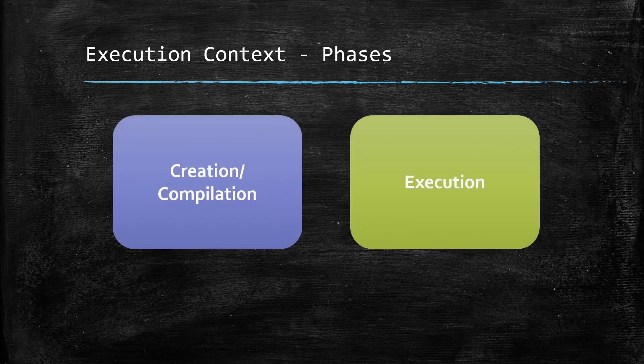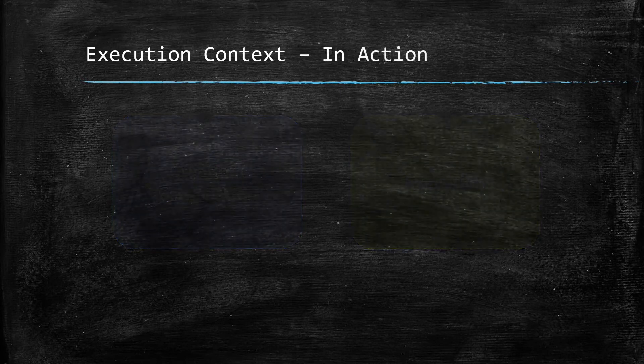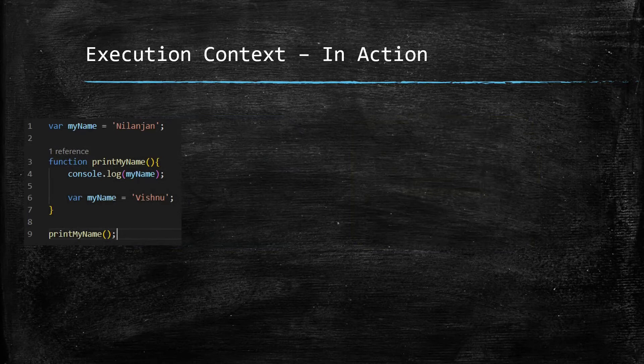Each execution context has two phases: one is the creation or compilation phase, and the other is the execution phase. This is a key concept to understand JavaScript hoisting and how the execution context behaves in each of these phases.